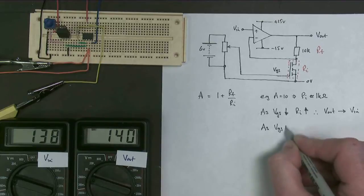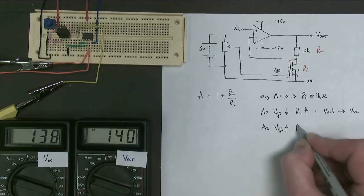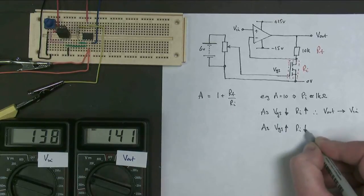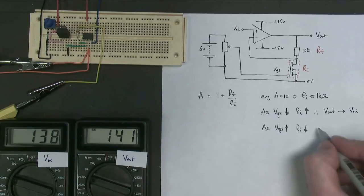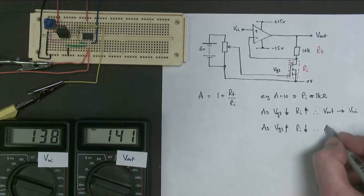As the gate source voltage goes up, RI tends to go down, which is a bad thing, and therefore the gain...